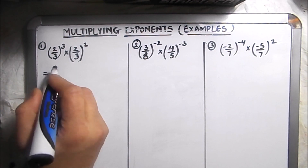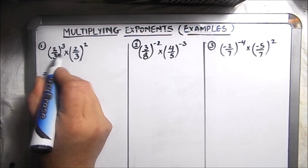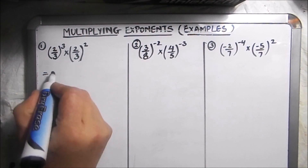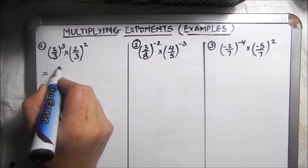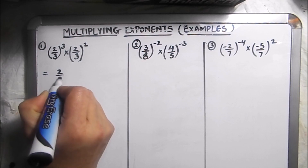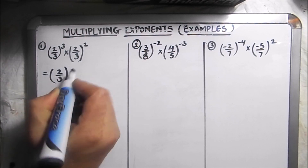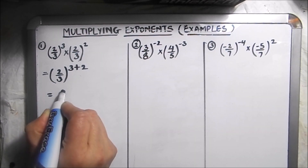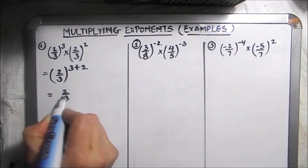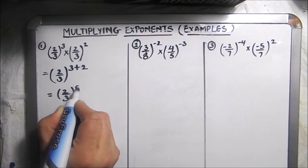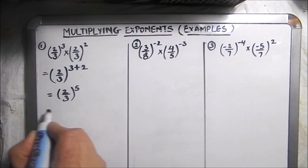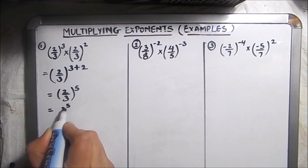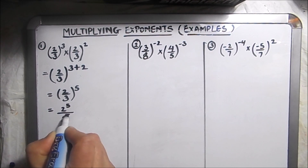According to the rule of exponents, when we multiply two exponents their powers get added. So here our answer will be 2 over 3 to the power 3 plus 2, which gives us 2 over 3 to the power 5, equal to 2 to the power 5 over 3 to the power 5.